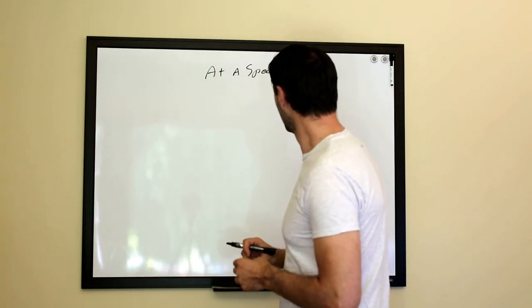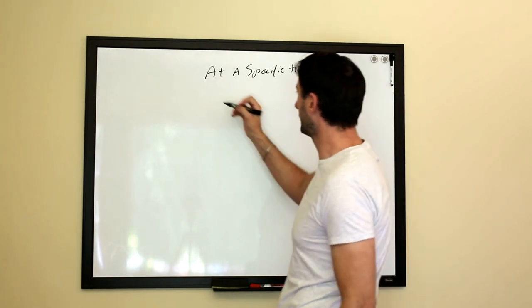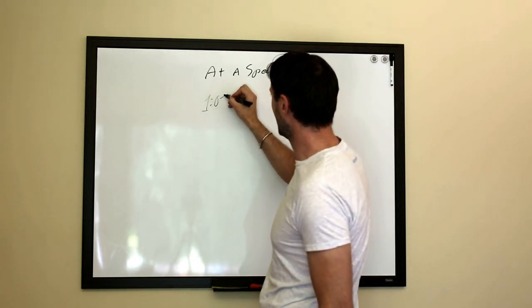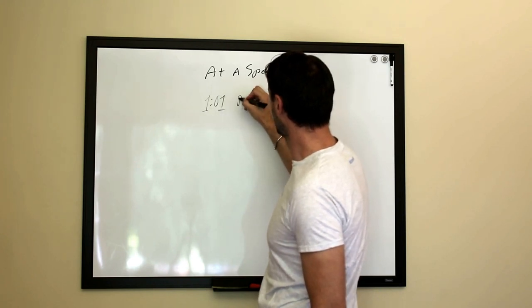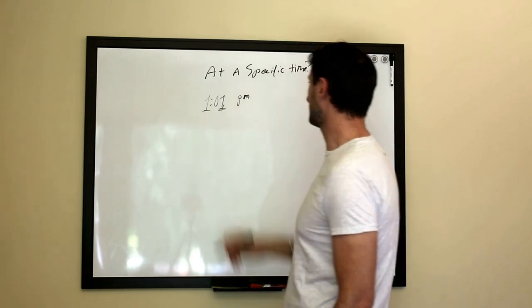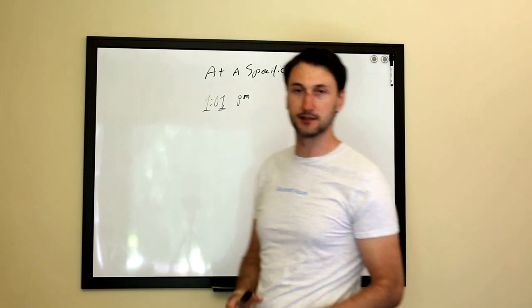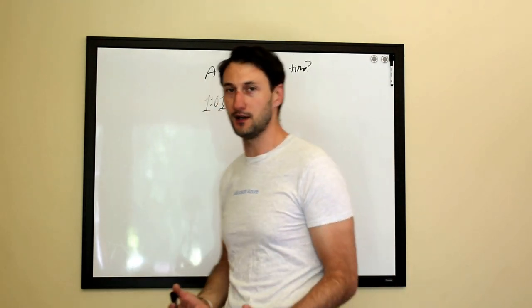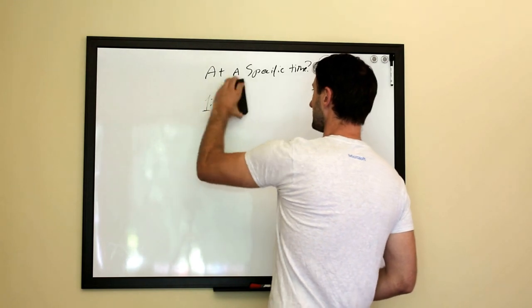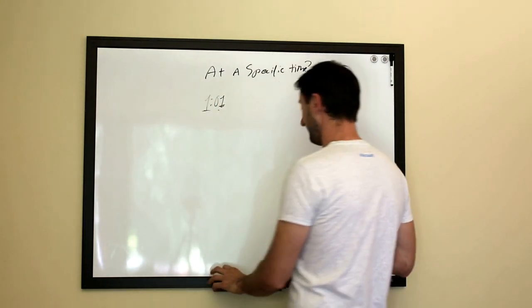There's actually a couple layers to this. Let's start with the first one. Let's say we want to have a task execute at 1:01 PM. That seems pretty straightforward but the first thing that comes to mind is what is time from the perspective of what does 1:01 actually mean.